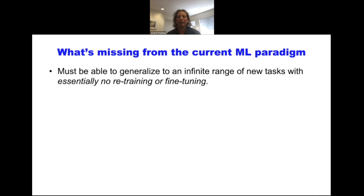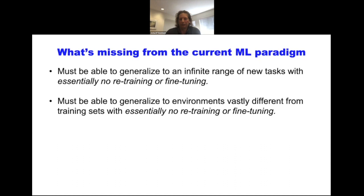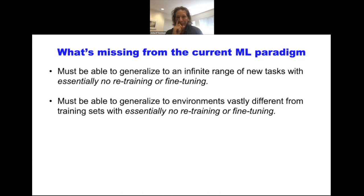It also requires being able to generalize to environments that are vastly different from the training setting, with essentially no retraining or fine-tuning. There was a great question after the first talk by Liz Spelke — from Chris Atkinson — asking whether the stimuli are ecologically plausible, because they're so different and simplified compared to the real world. But as a cognitive scientist, what's so striking is that we can generalize not just to tasks but to environments and ways the world could look that are strikingly different, yet share certain abstract properties with the world. That's what common sense is about.